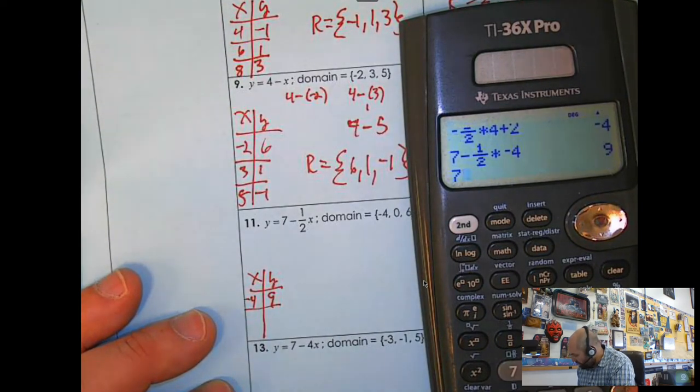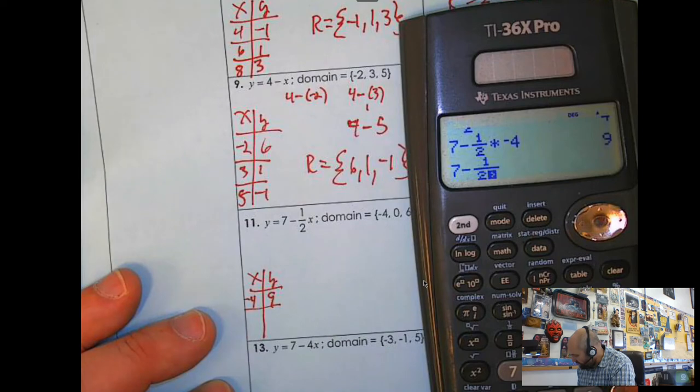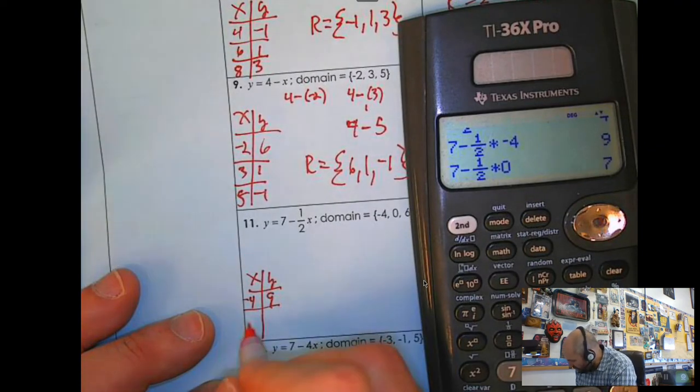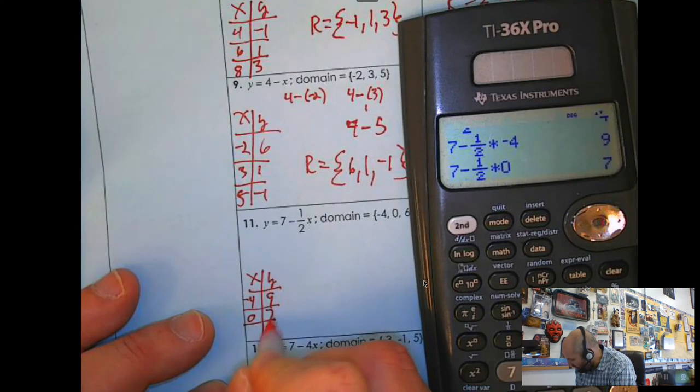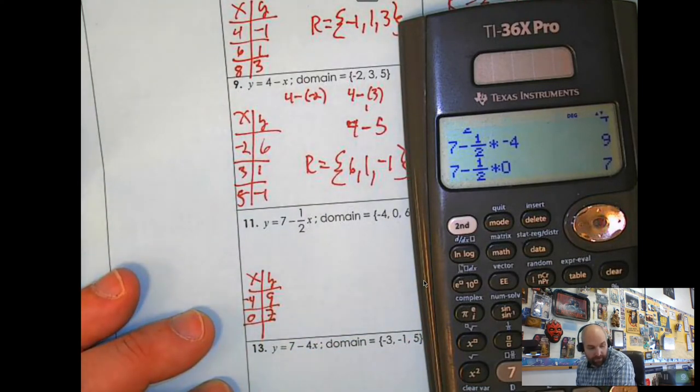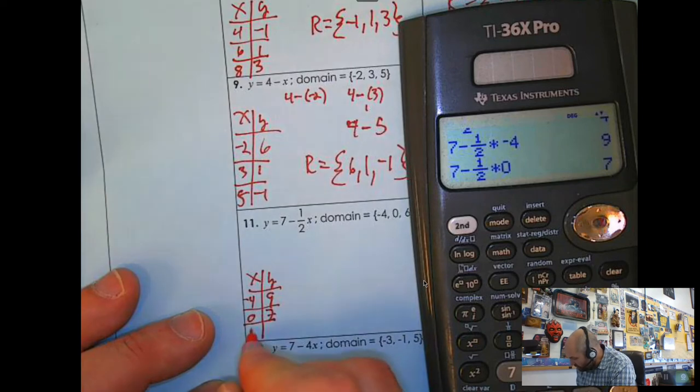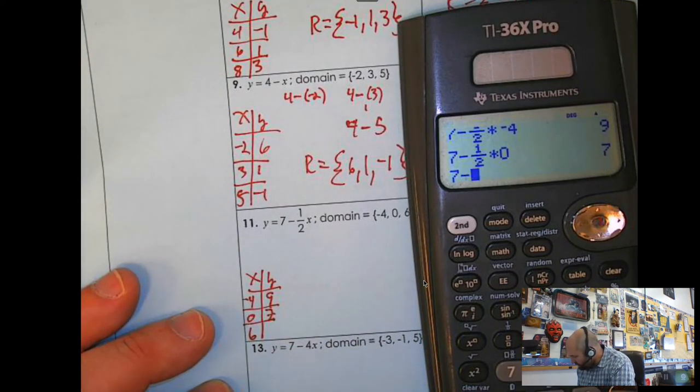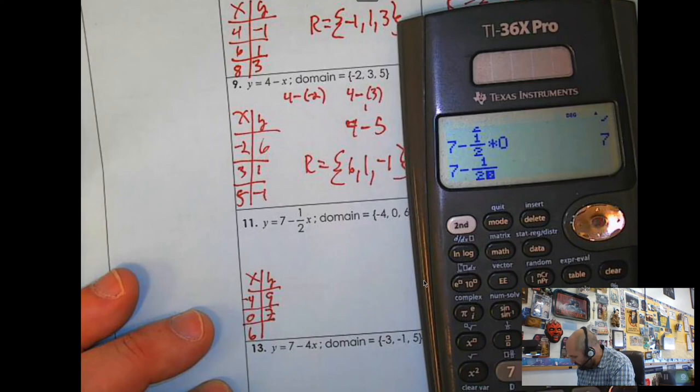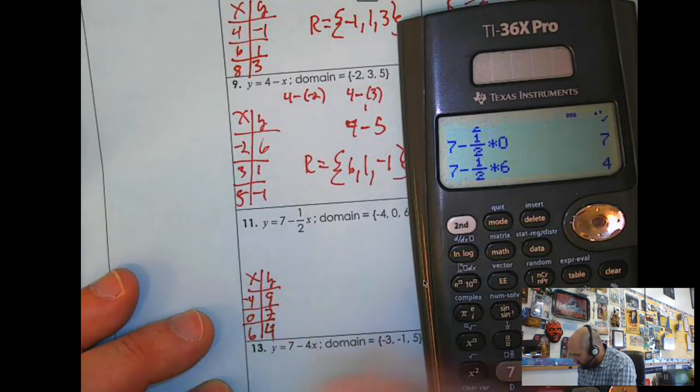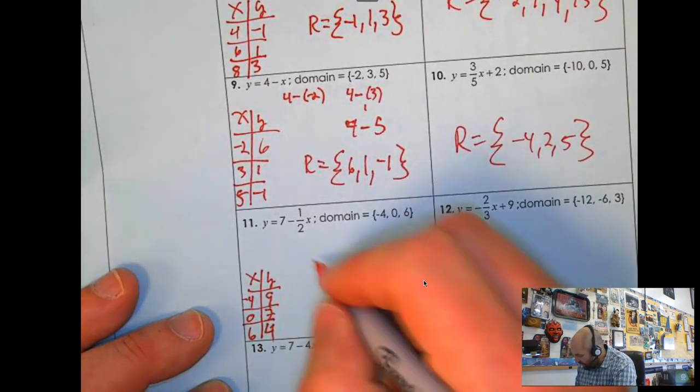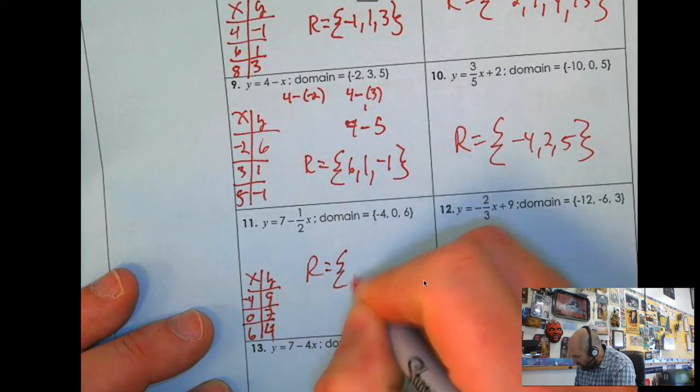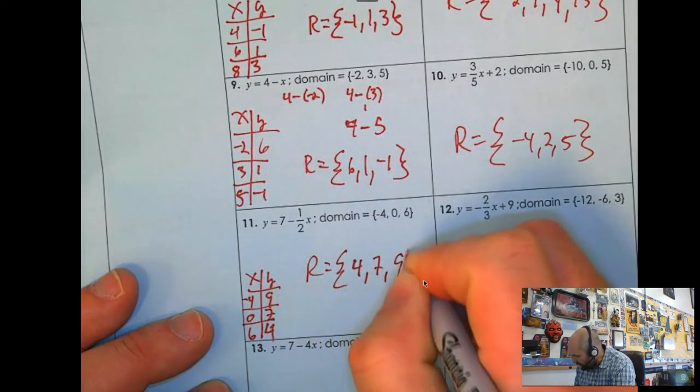Then I'm going to do 7 minus 1 half times it by 0, and I get 7. So when I plug in 0, I get 7 as an output. And then I'm going to plug in 6. So I'm going to do 7 minus 1 half times it by 6, and I get 4. So my range for this guy is, and I can write it in sequential order, so 4, 7, 9. So that pretty much makes sense there.